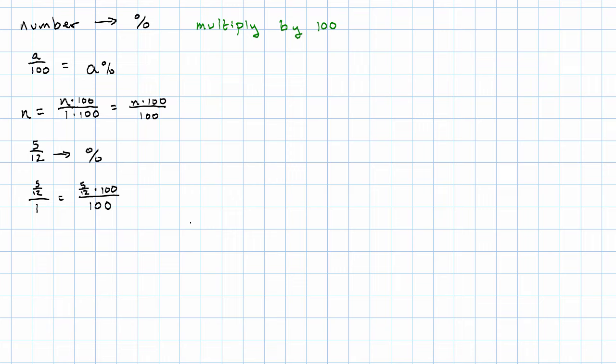5/12 times 100 over 1, that's 500 twelfths. I think four is a common factor maybe?